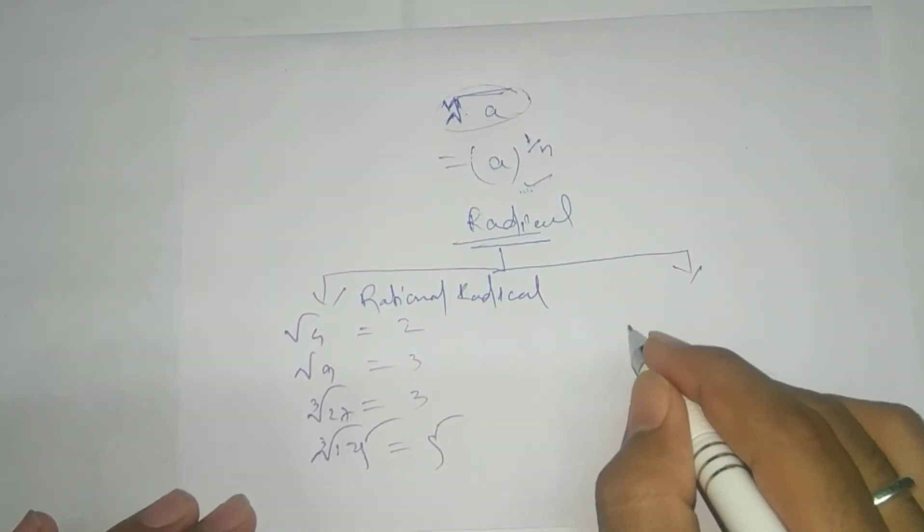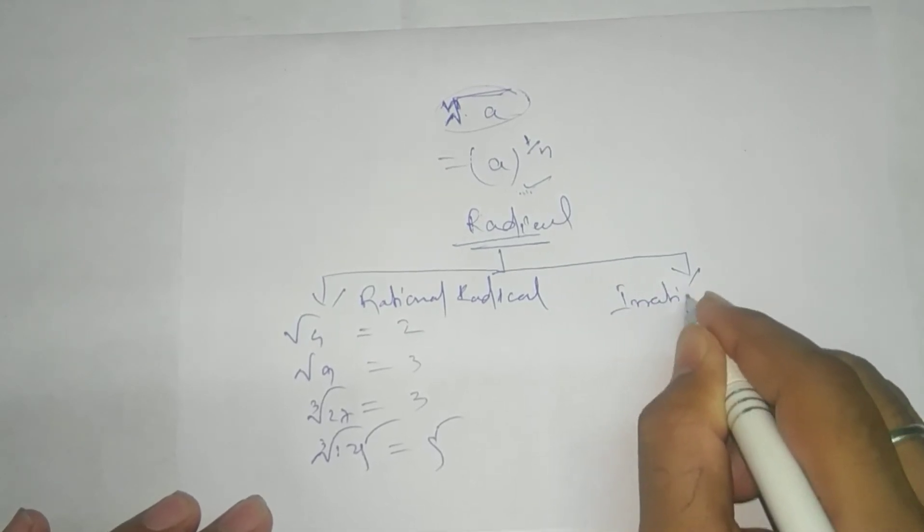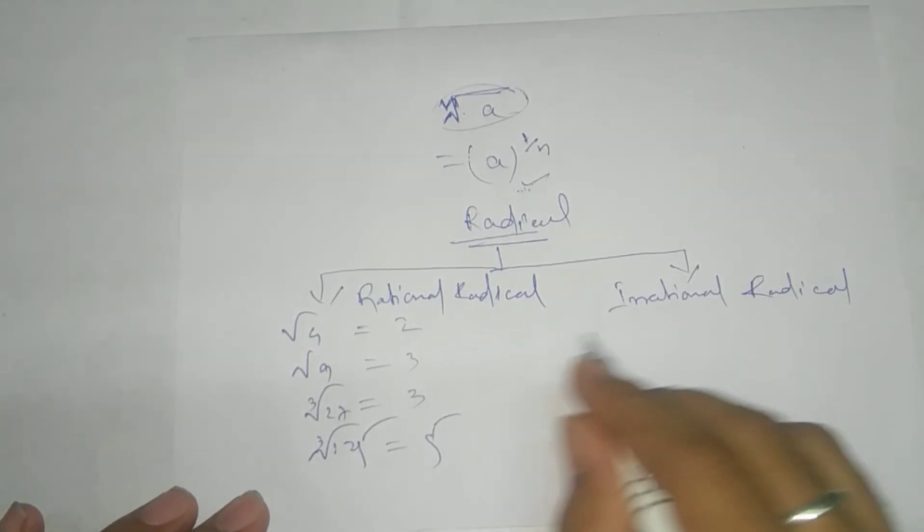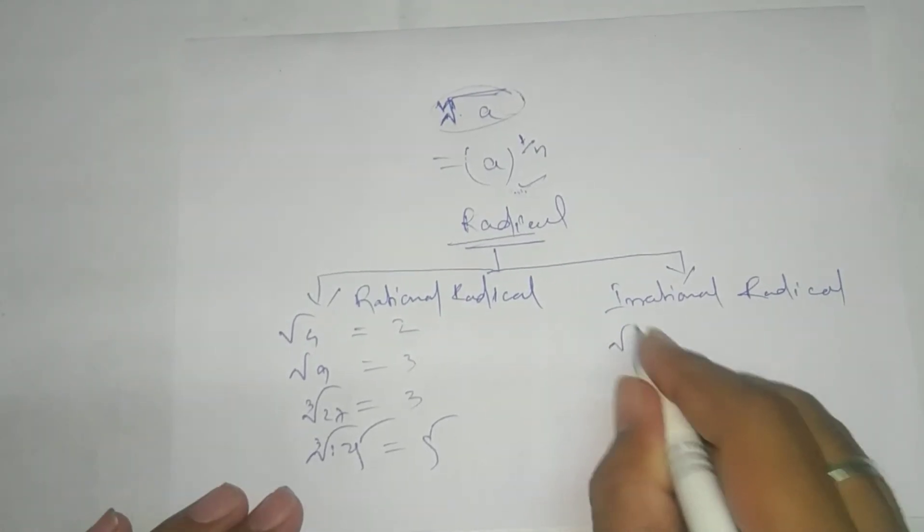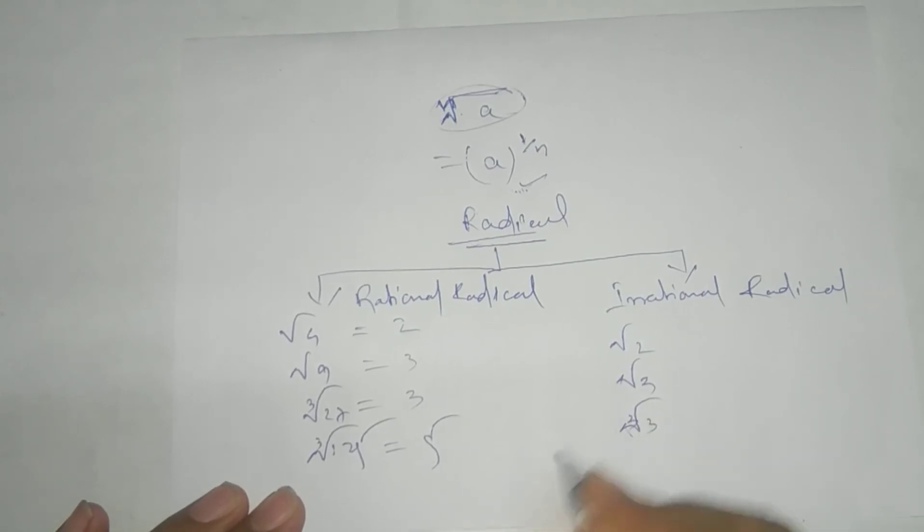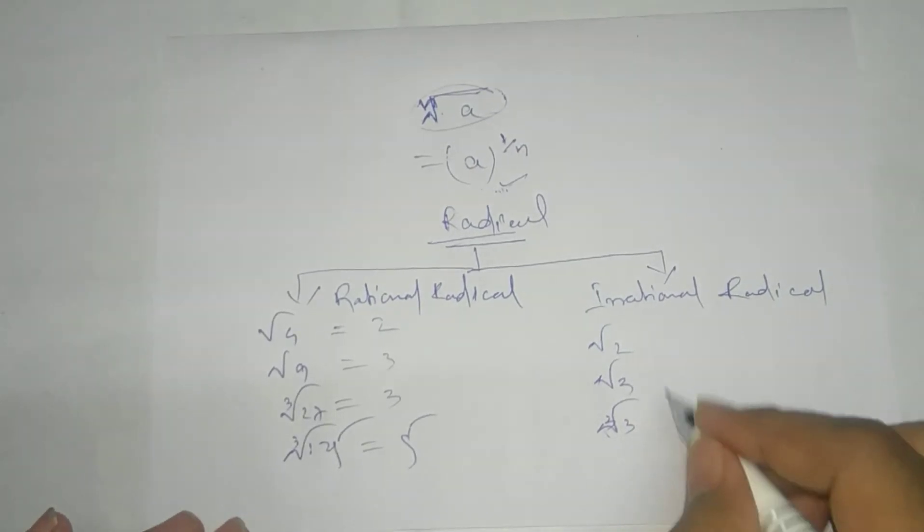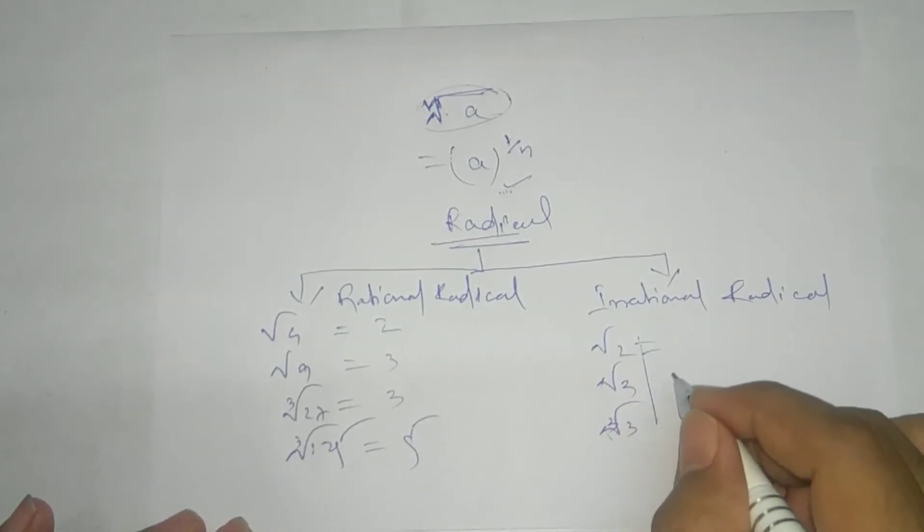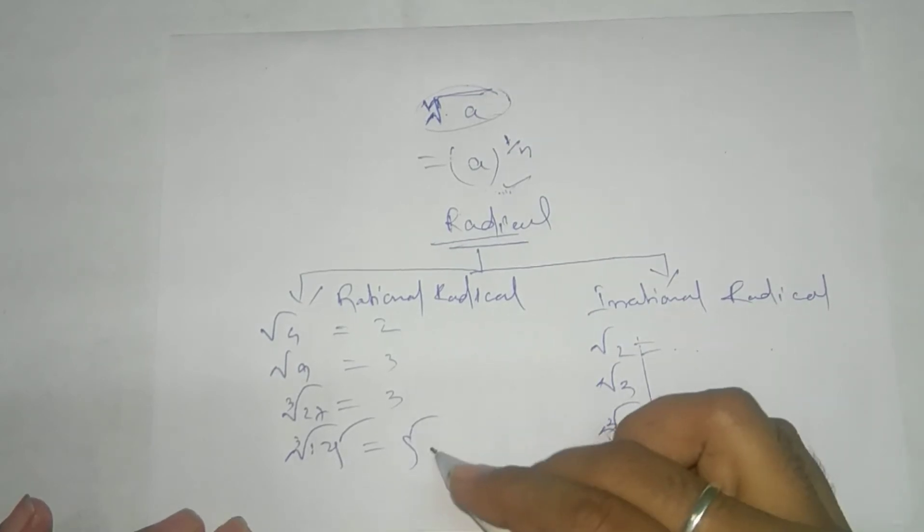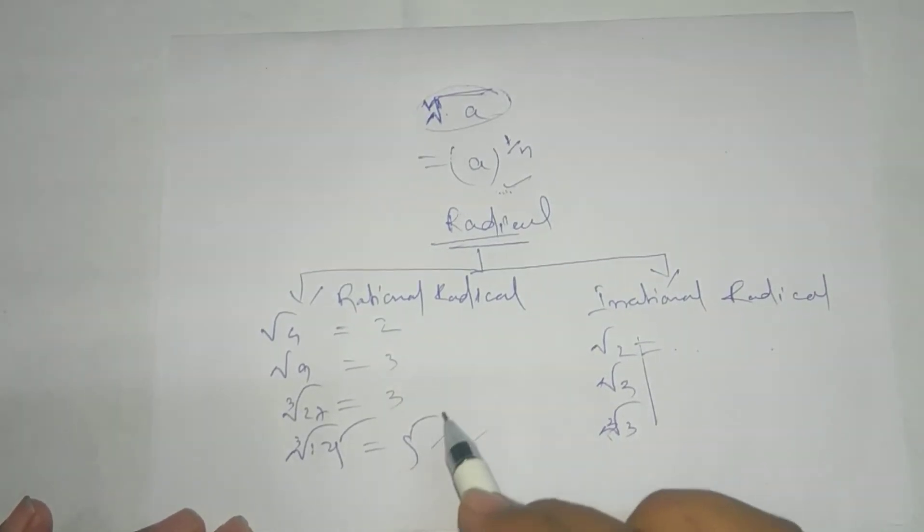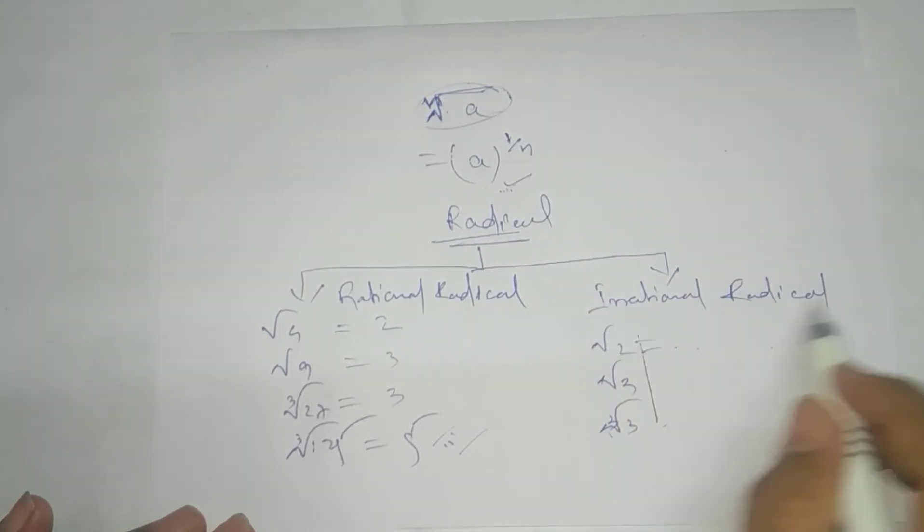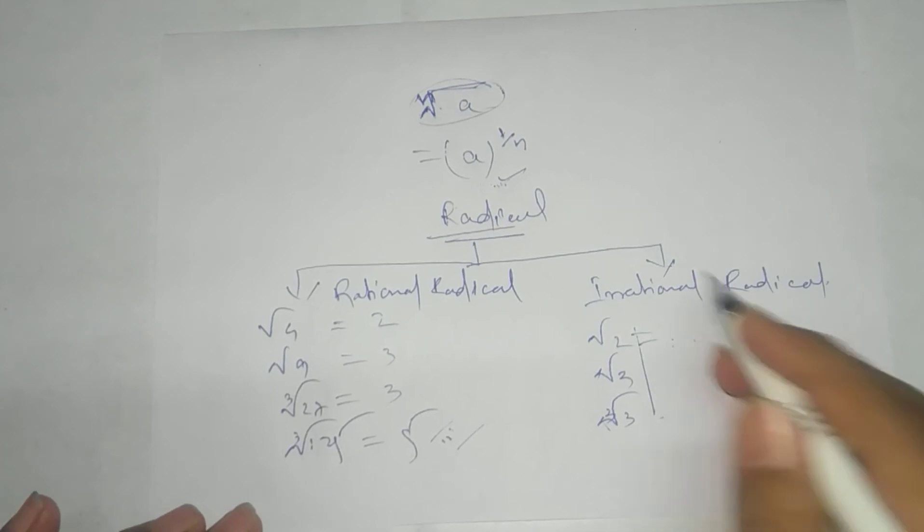And another one, I hope you have already guessed, that is irrational radical. That means, if we take root 2, root 3, cube root of 3. This will not give you accurate result. It will never terminate. They will terminate. These are rational form and this will be your irrational form.